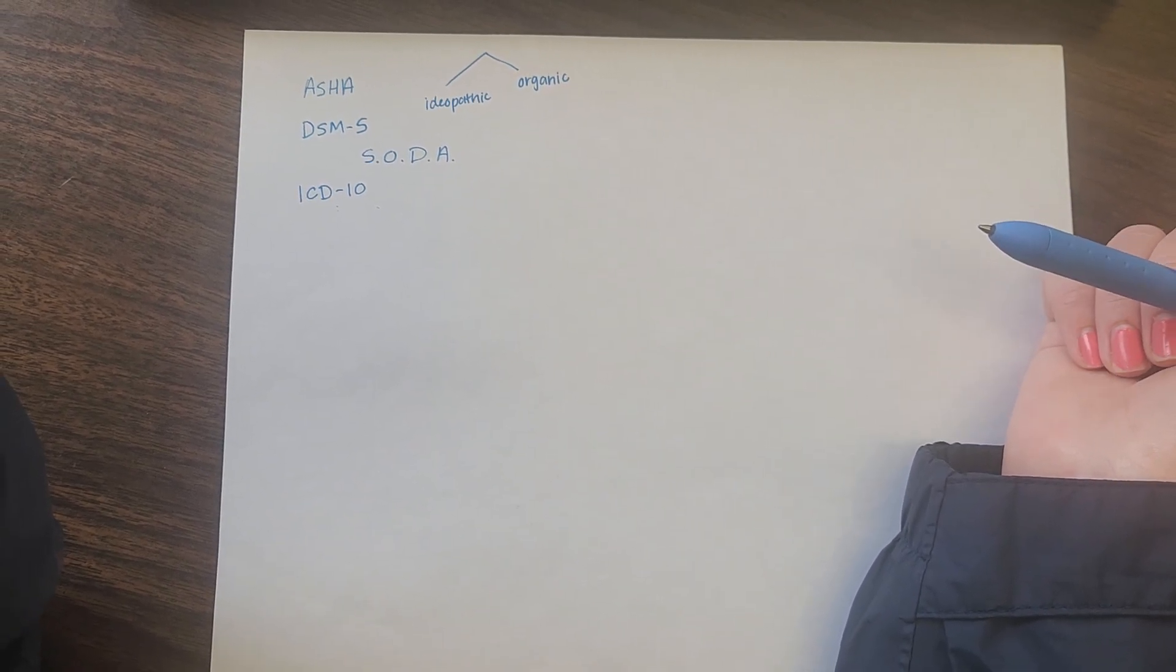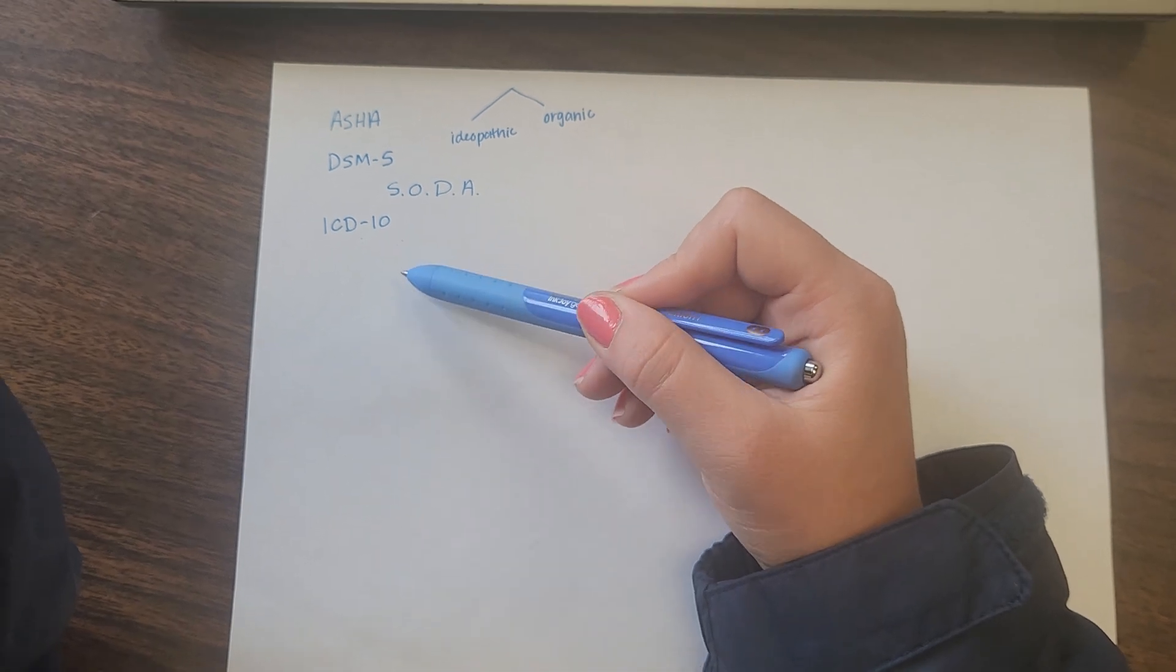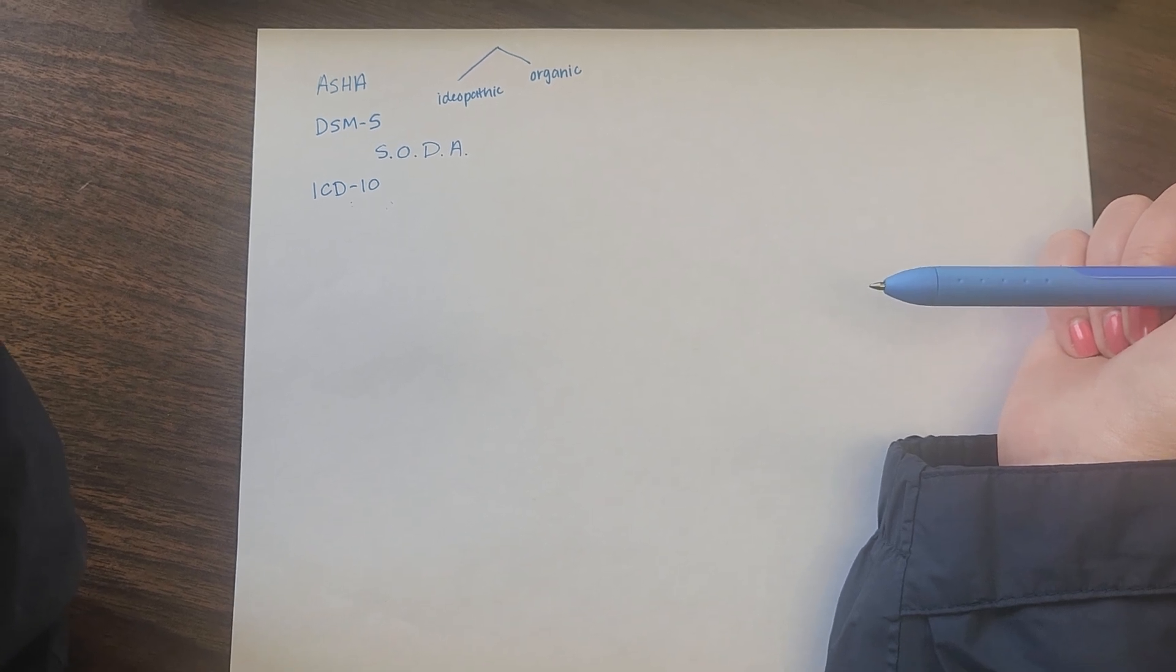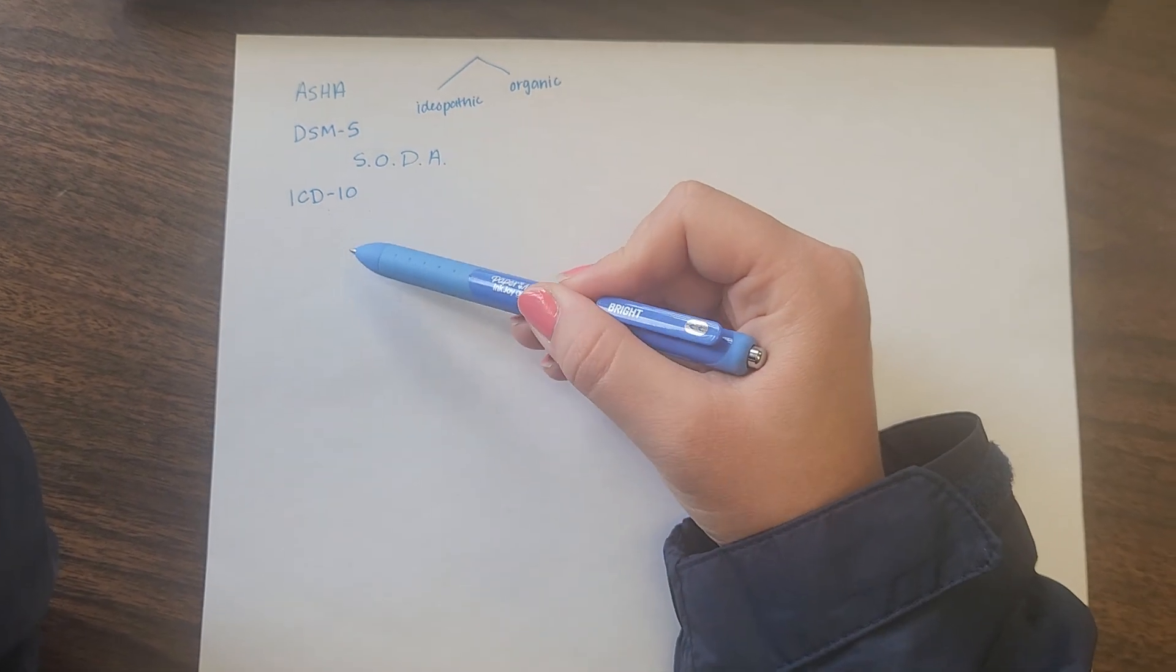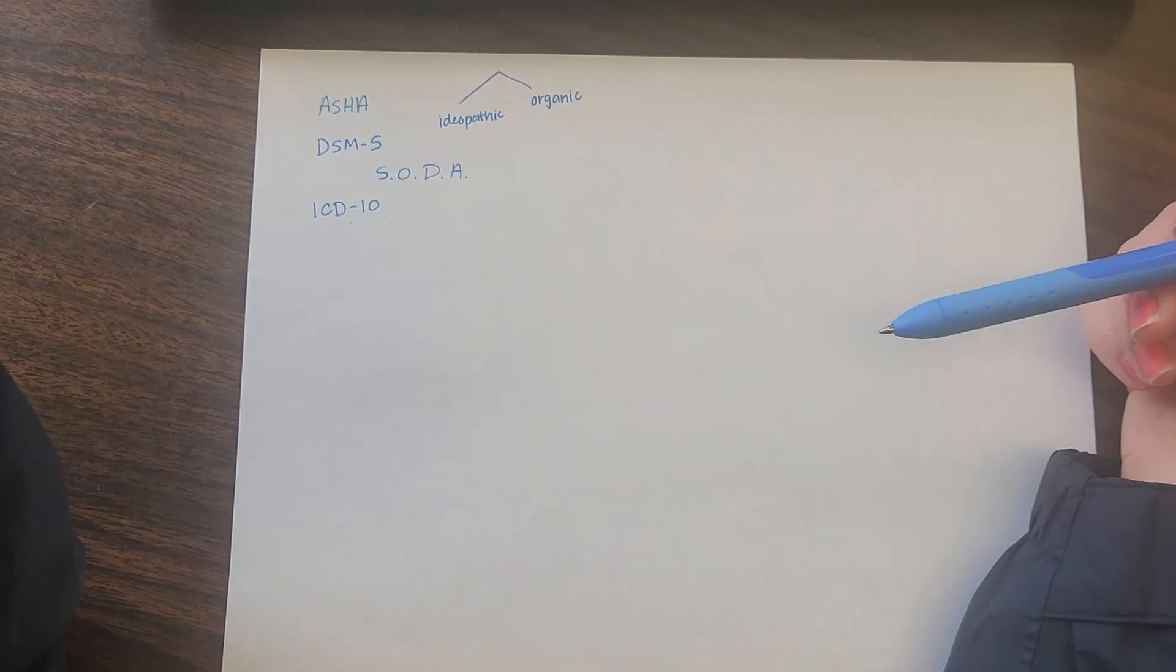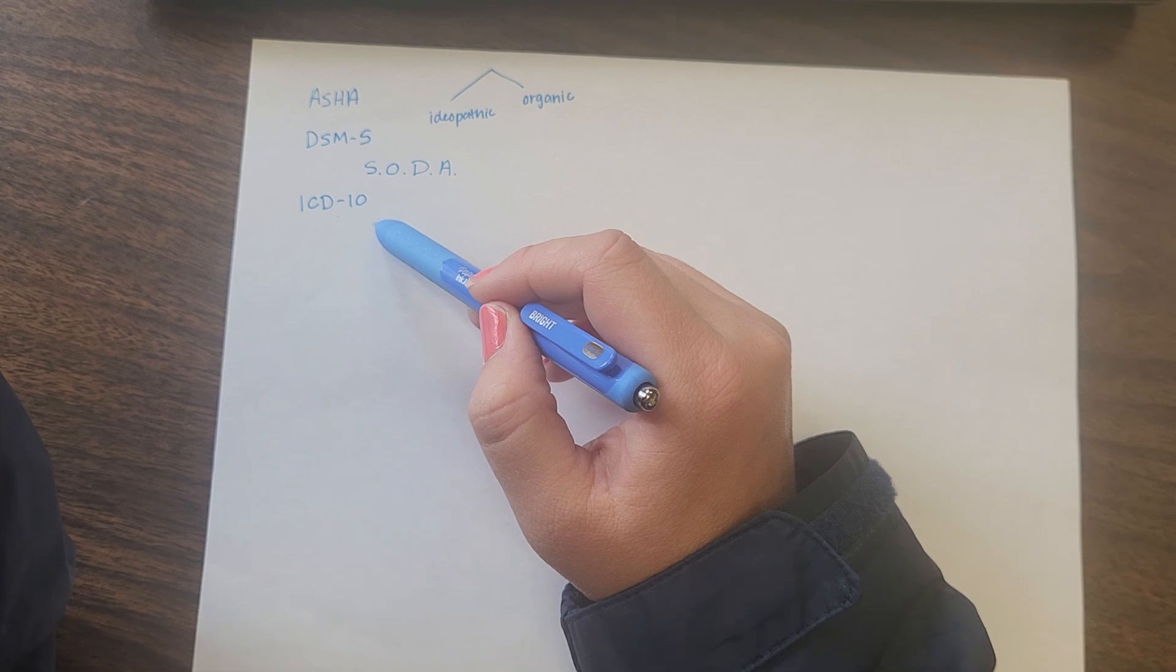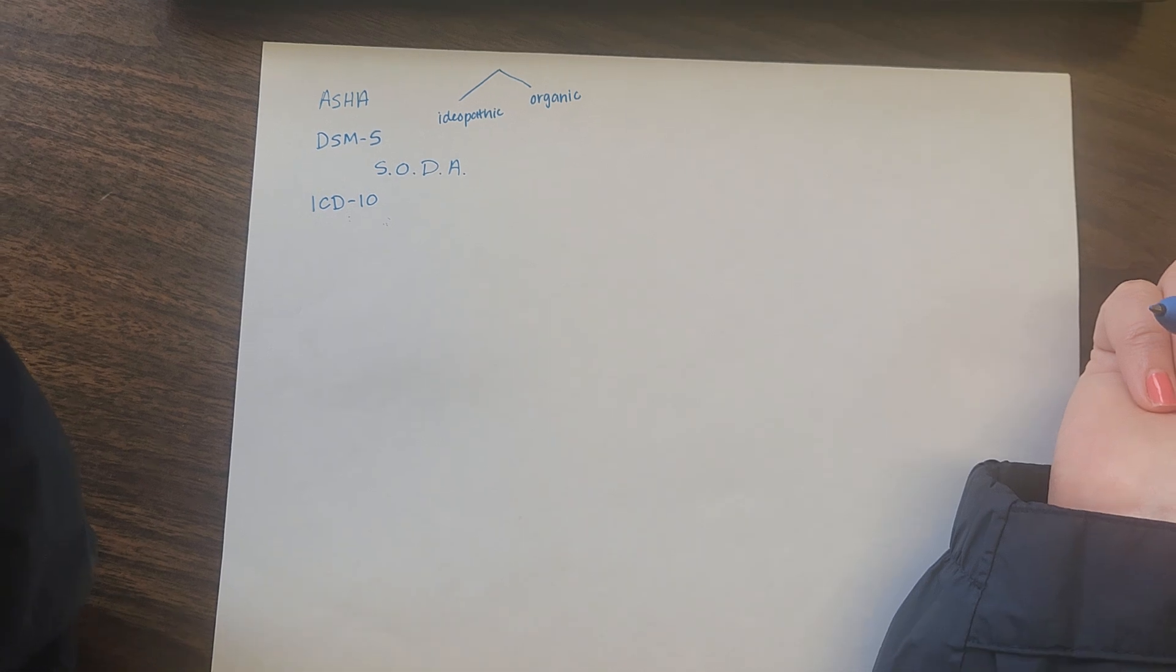So ICD-10 also agrees upon the fact that speech sound disorders occur in children, but they have different codes for different types of SSD. The one that we're reading on the slide indicates that it's a speech problem without any associated language problems or without any associated genetic disorders. So there would be a different code for a speech problem with a language disorder or a speech problem that's related to a genetic disorder like Down syndrome. So we're mostly going to focus on the ASHA, but I wanted you to be aware that this governing body also puts out a definition because we use the codes in billing.